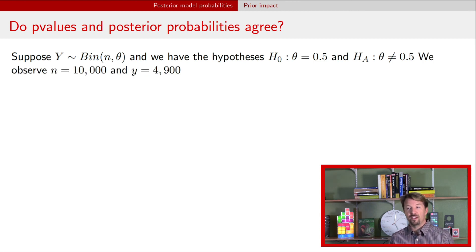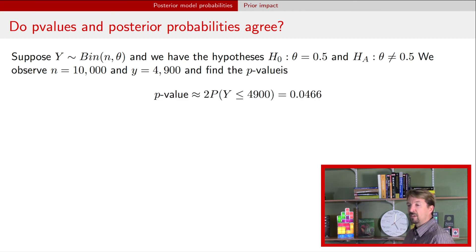If you do a p-value calculation, when you observe 10,000 observations and 4,900 of those are successes, then you get a p-value that's about 0.047. If you're going to use the standard cutoff that people use of 0.05, then you would reject the null hypothesis. So this seems to be evidence against that null hypothesis being true.